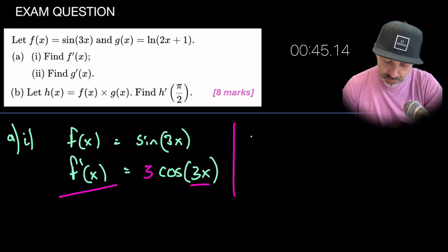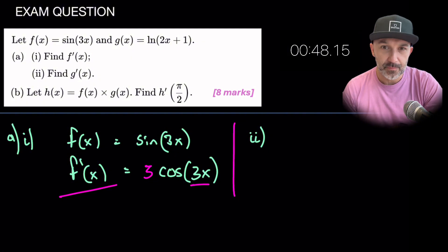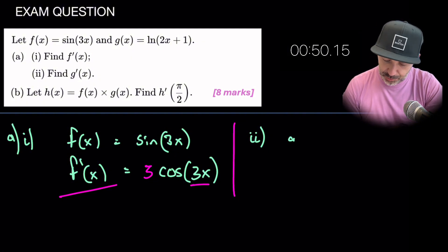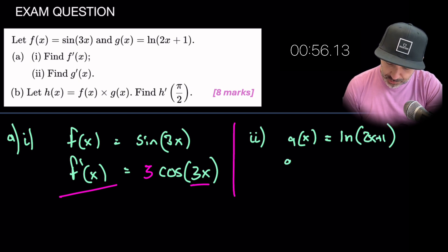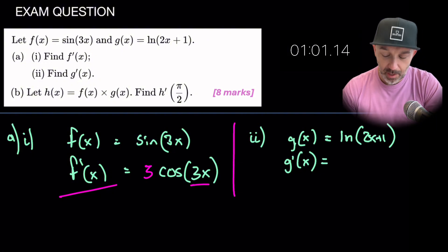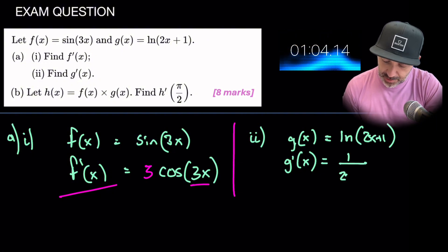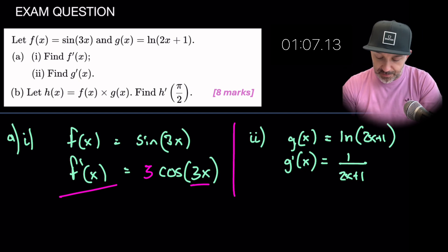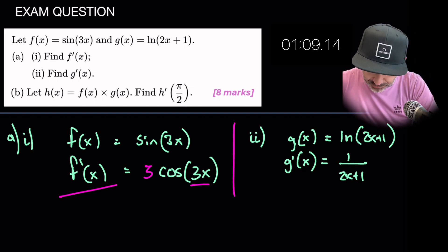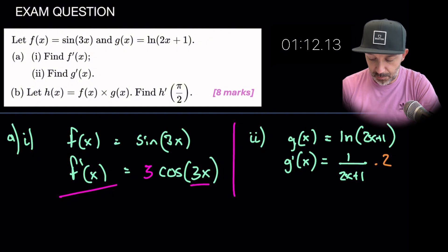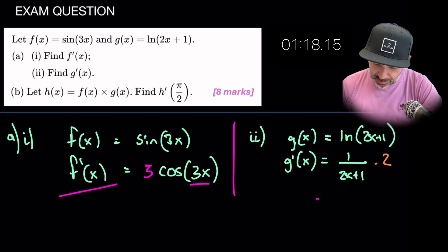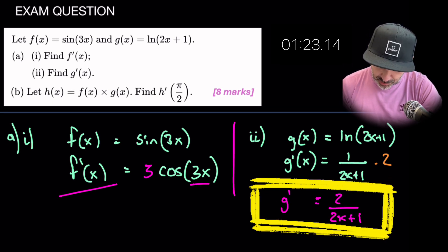Right let's go ahead and look at part two which says find g prime of x. So if g of x in the question is given to natural log 2x plus 1 then g prime of x is equal to 1 over the value here which is 2x plus 1 times by the derivative of that value. So the derivative of that value is just 2 because there's 2x plus 1, we're using power rule which results in 2. So our final result here then would be 2 over 2x plus 1. So that's g prime of x.